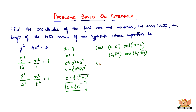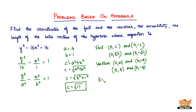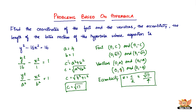Now that we found the foci, we can find the vertices. The coordinates of the vertices are given by 0 comma a and 0 comma minus a, so we have 0 comma 4 and 0 comma minus 4. Then the eccentricity is given by e equals c divided by a, which equals square root of 17 divided by 4.